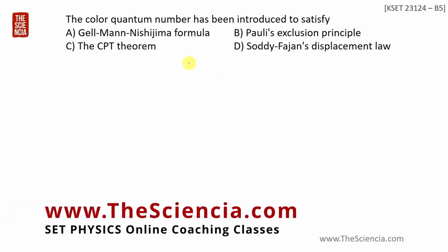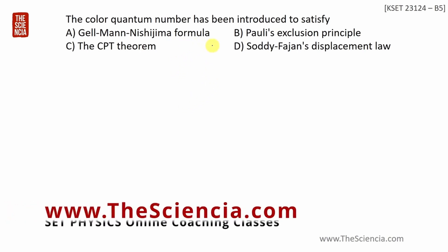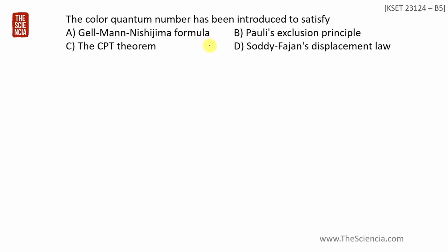The color quantum number has been introduced to satisfy which of the following? Option A: Gell-Mann Nishijima formula. Option B: Pauli Exclusion Principle. Option C: CBD theorem. Option D: Displacement load.